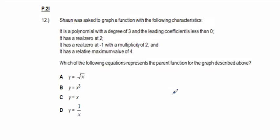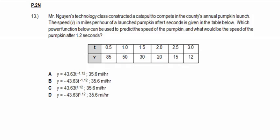Problem 12: Sean was asked to graph a function with these characteristics — polynomial of degree 3 and leading coefficient less than 0. The only answer choice with degree 3 is answer choice B. I think that one was a carryover from the last test.